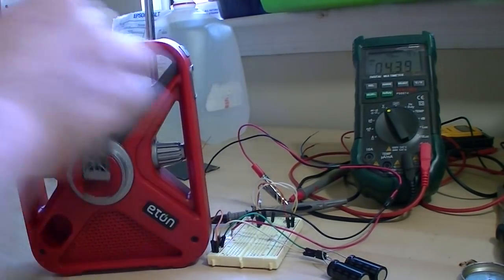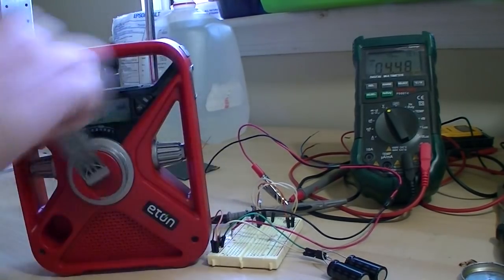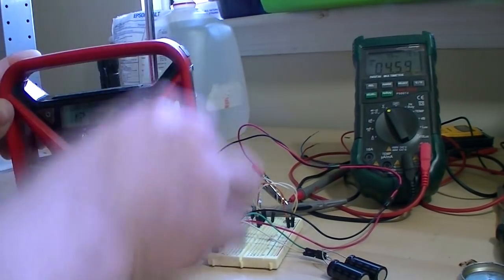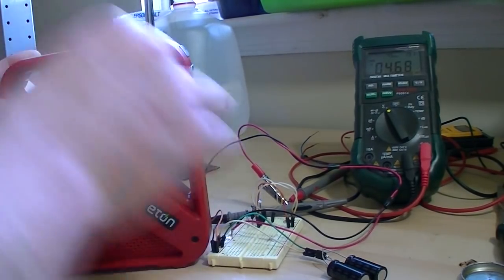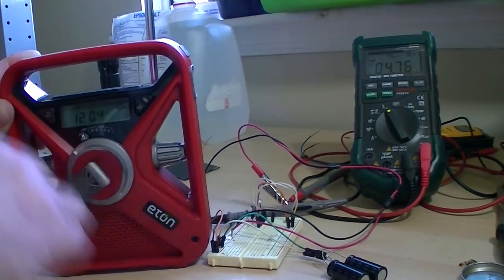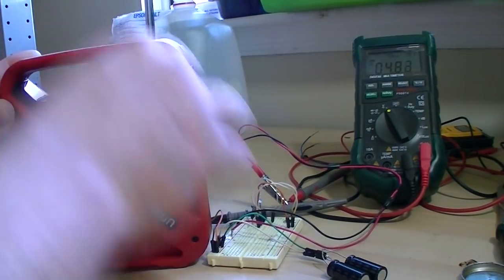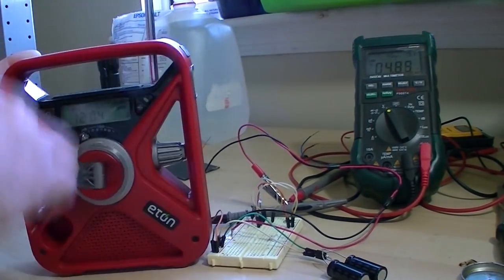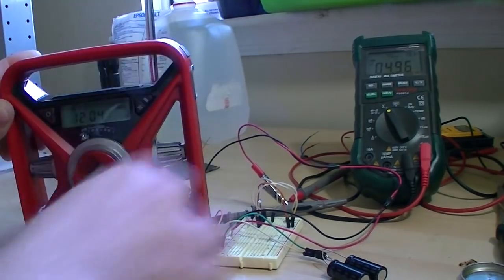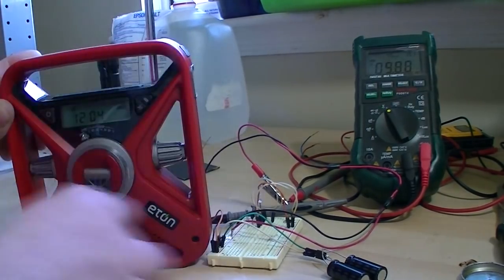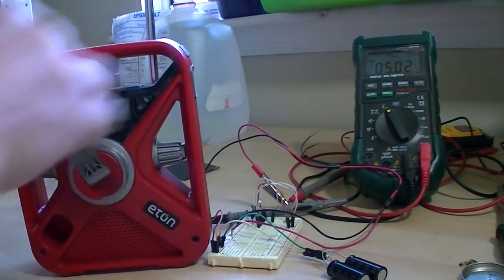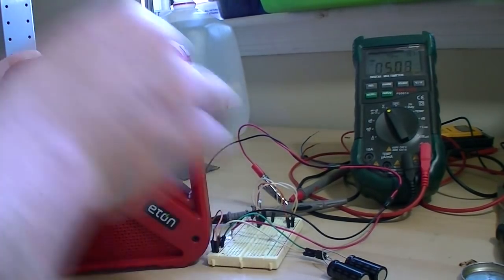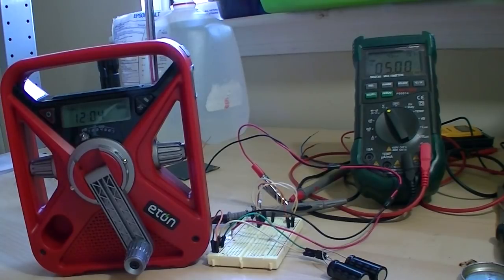As the voltage goes up on the supercapacitor, it gets easier and easier to crank this. It's not taking as much amperage. Let's go over just a little bit just to handle the leakage in the supercapacitor. And there we go. 5 volts, roughly about 30 seconds or so.